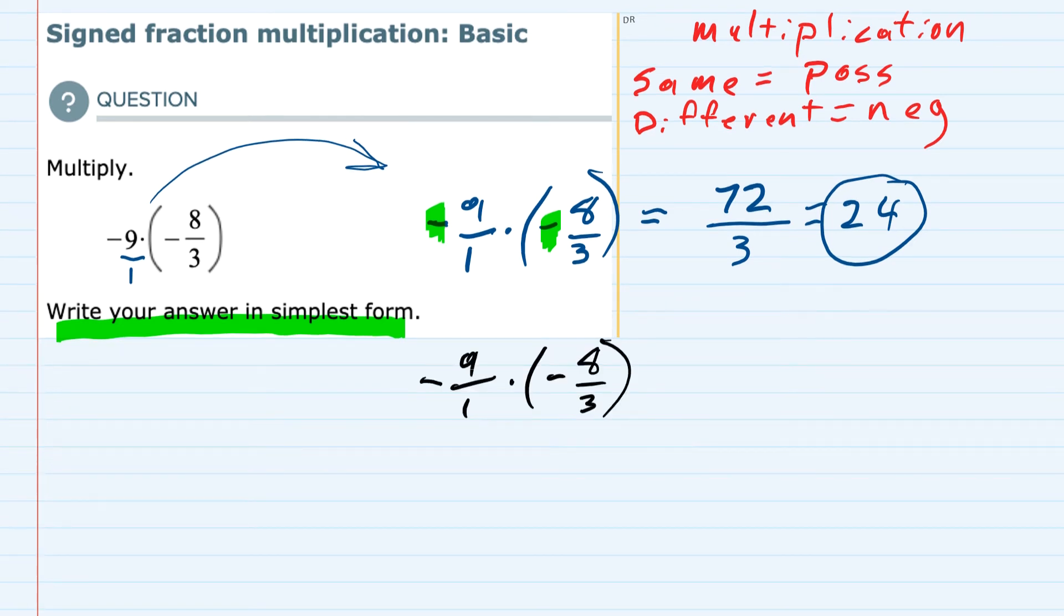And the rule here is about cross-canceling. So on the diagonals, we can cancel whenever we multiply fractions if both numbers on the diagonal are divisible by the same thing. So for example, the 9 and the 3 are both divisible by 3. So I can divide the 3 by 3 and get 1, and divide the 9 by 3 and get 3.